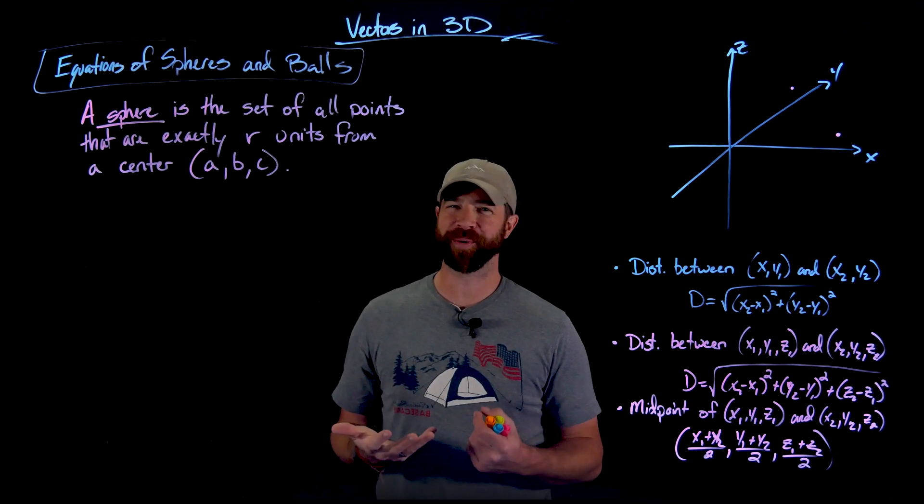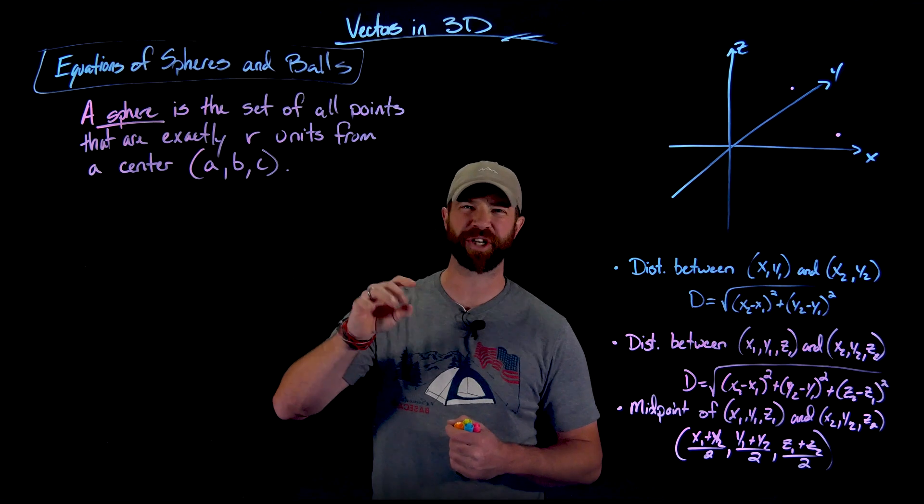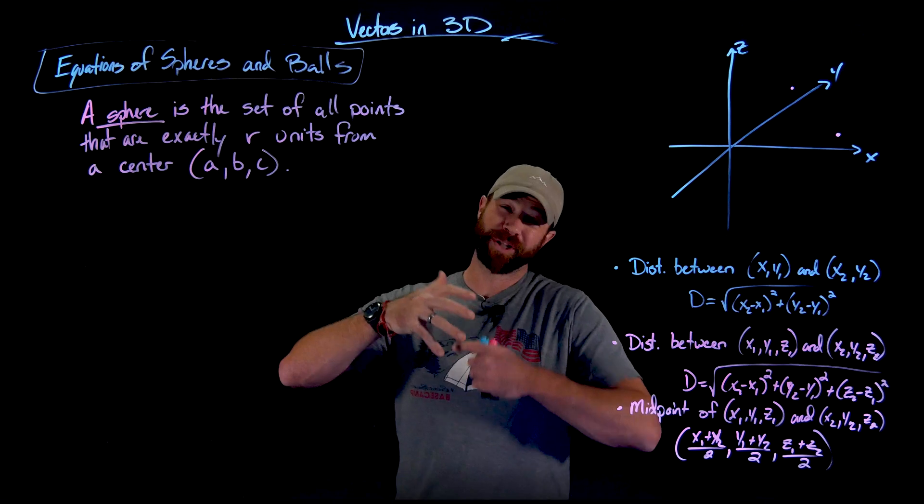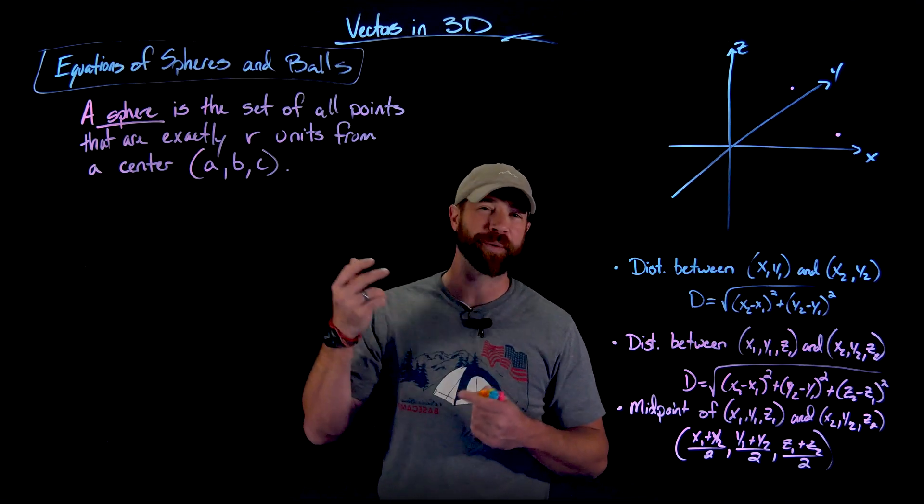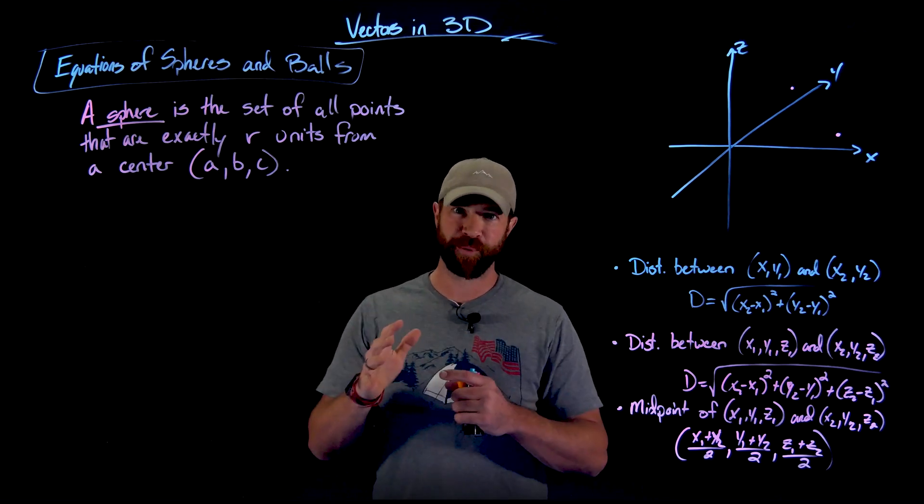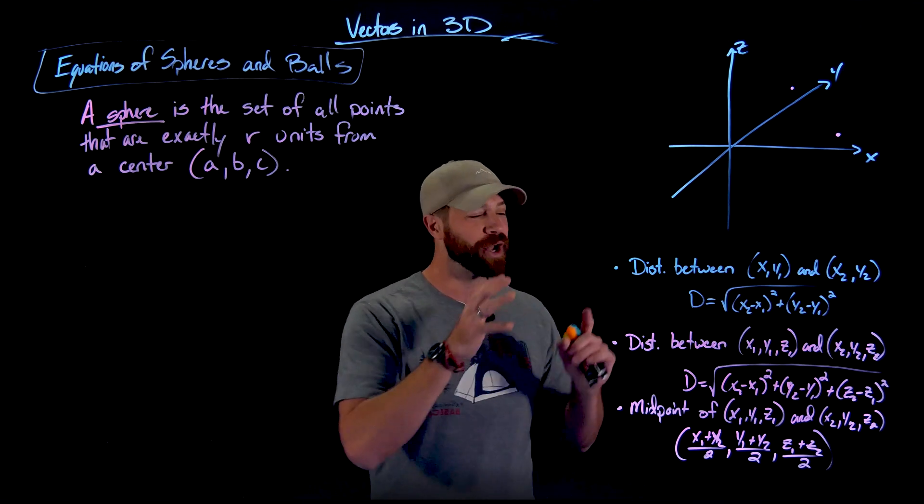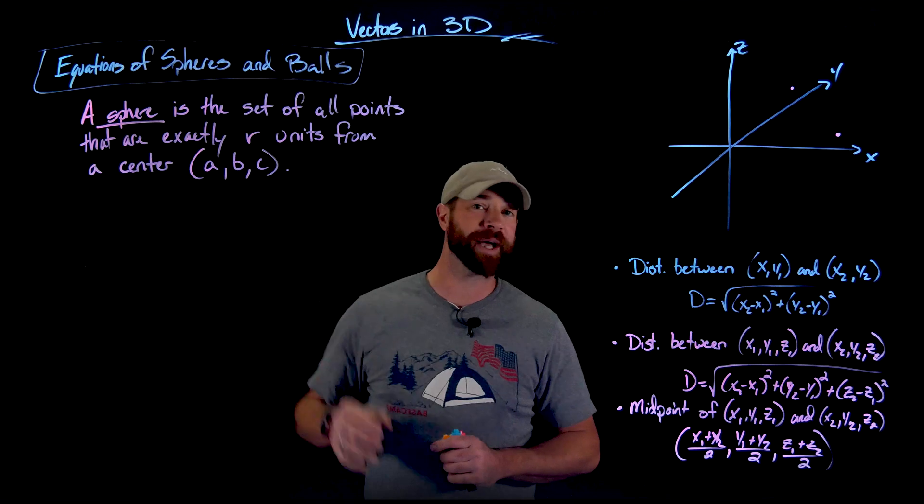So far, the only equations that we've seen in the three-dimensional plane are these planes that are just like X equals 3, Y equals 0. Just these flat planes which represent all of the points that have a constant X value, Y value, or a Z value. The other ones that we can tackle at this point, and we'll do more in the near future, but at this point, we can easily talk about knowing the distance formula. We can easily describe the equation for a sphere.